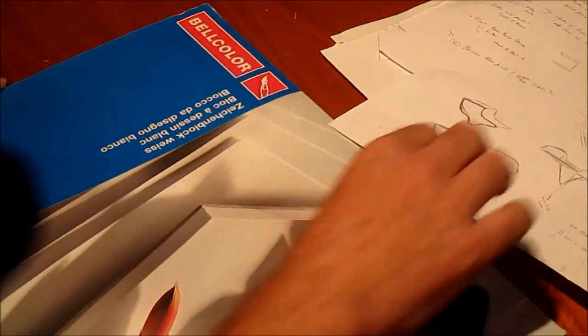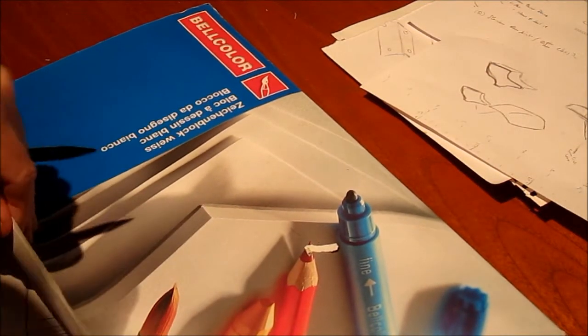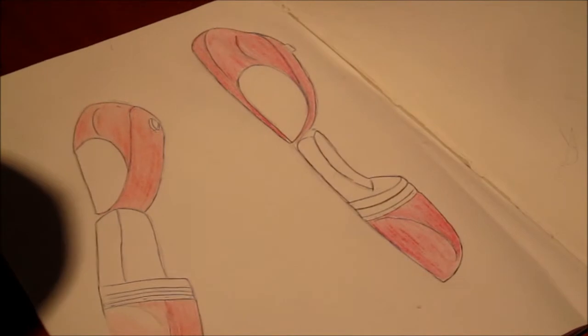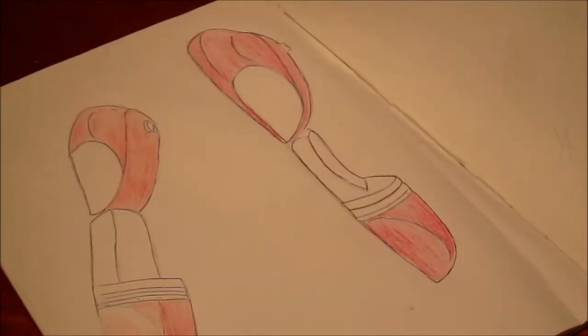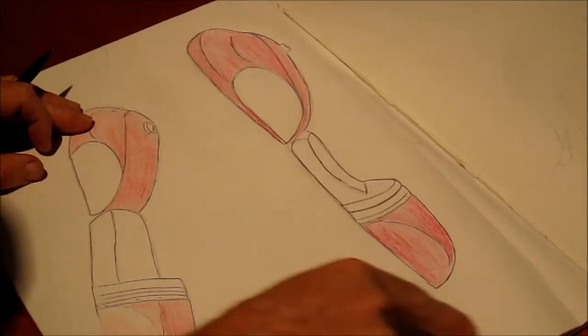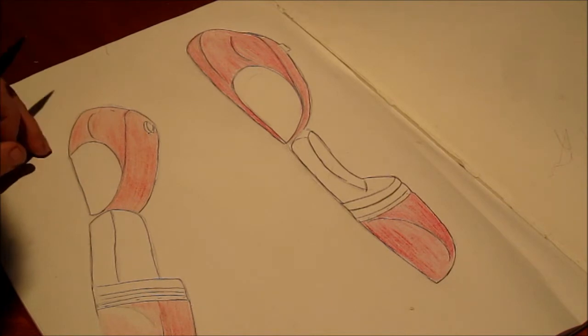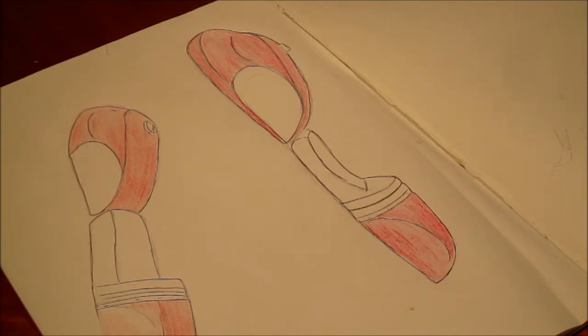All you need is a pencil and a bit of time, a big old A3 drawing pad. This is what I've been doing today with my pencils and coloring book. I took the general outline of the bike, I just copied them from my laptop.